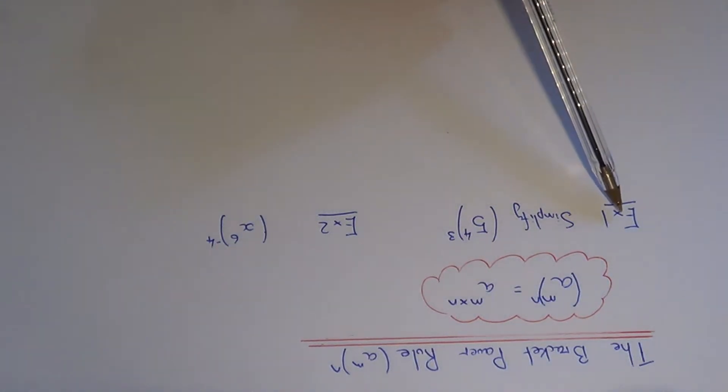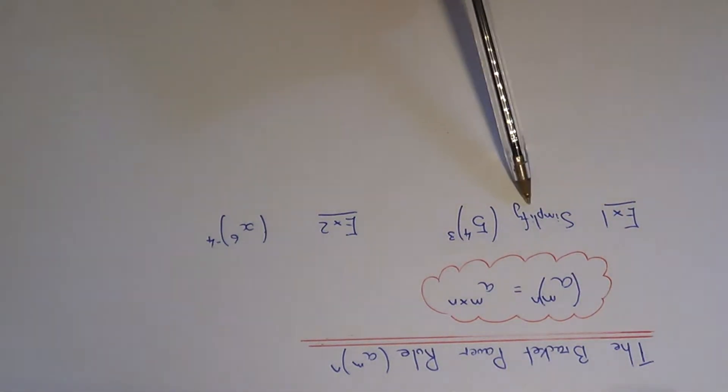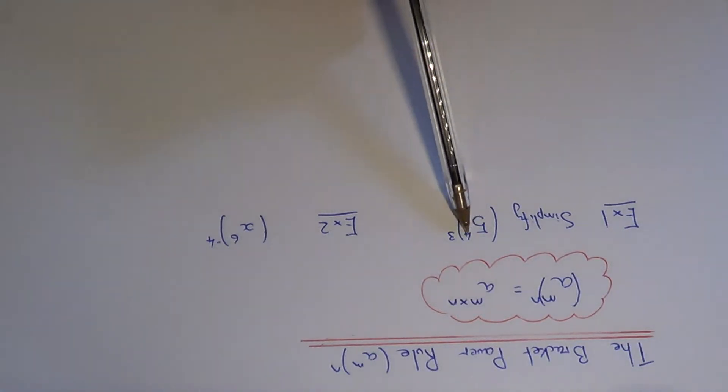Let's look at the examples here. Example one: we need to simplify five to the power of four in a bracket to the power of three.